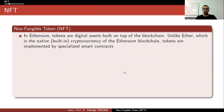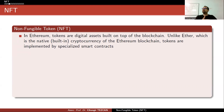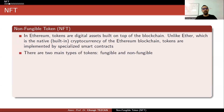NFTs are another use case for blockchain. In Ethereum, tokens are digital assets built on top of the blockchain. Unlike Ether, which is the native built-in cryptocurrency of the Ethereum blockchain, tokens are implemented by specialized smart contracts. There are two main types of tokens: fungible and non-fungible.